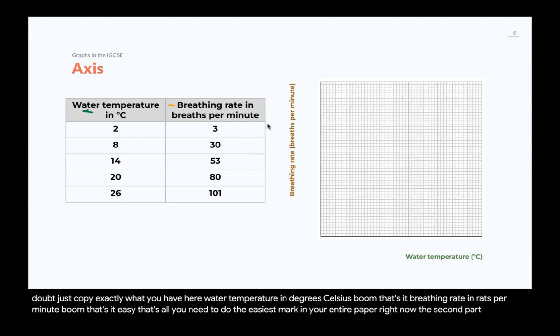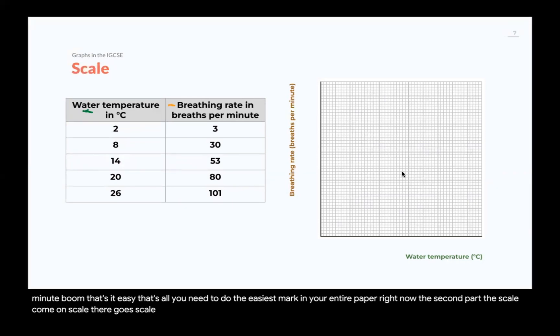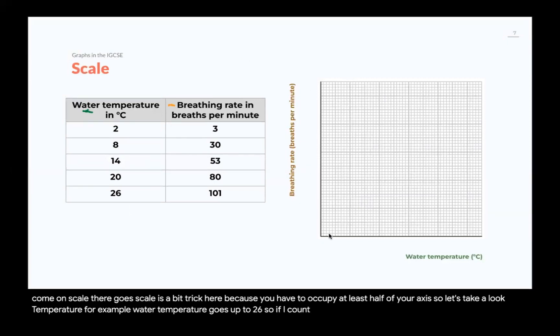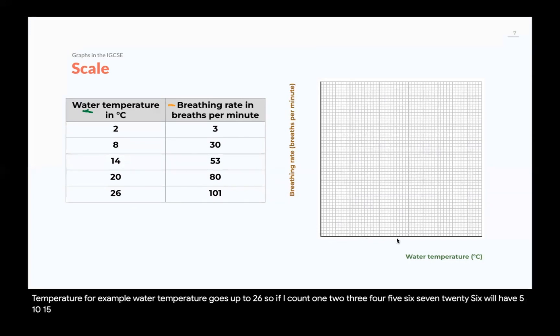Now, the second part, the scale. Scale is a bit trickier, because you have to occupy at least half of your axis. So, let's take a look here at water temperature. For example, water temperature goes up to 26. So, if I count 1, 2, 3, 4, 5, 6, 7, 26, we'll have 5, 10, 15, 20, 25. 26 would be right here. And that's not enough. That's not good. And everything will be so squished.